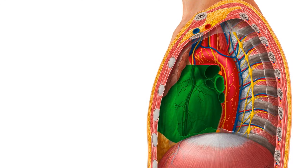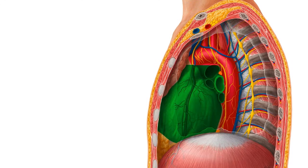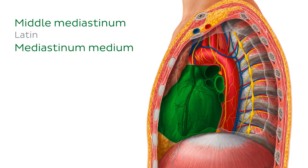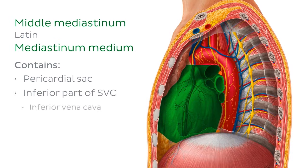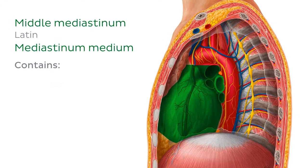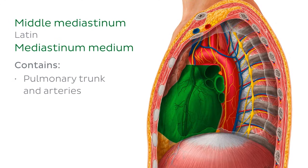Moving posteriorly, we're now entering the middle mediastinum, which is the largest portion of the inferior mediastinum. And it's dominated by the pericardial sac, which means that the middle mediastinum is where our heart takes residence. In addition to the great vessels, such as the inferior part of the superior vena cava, the inferior vena cava, the pulmonary veins, the pulmonary trunk and arteries, and of course, the ascending aorta.